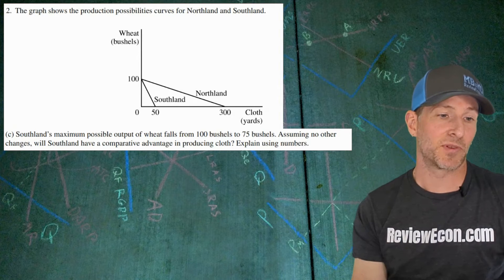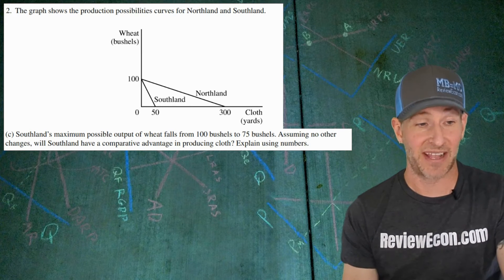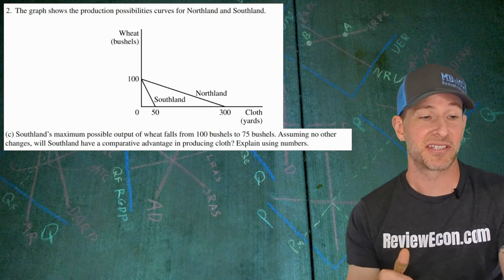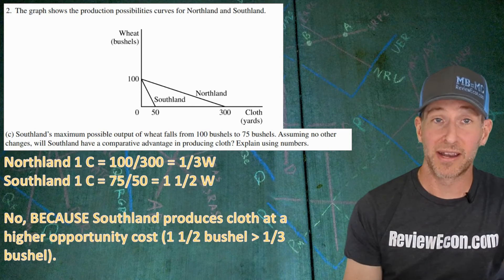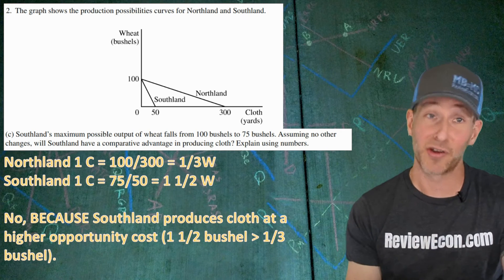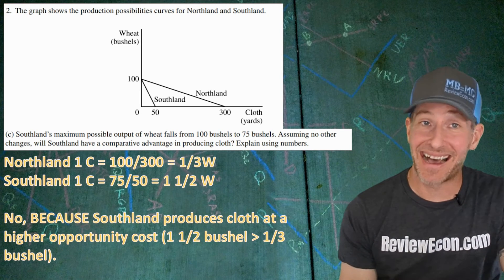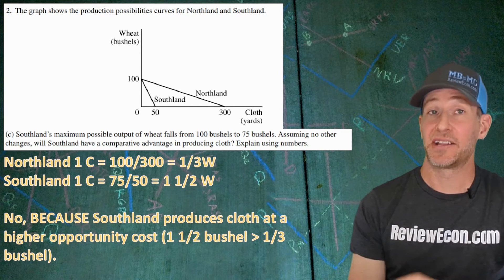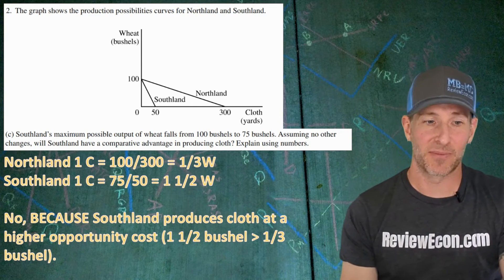On to part C, Southland's maximum possible output falls from 100 bushels of wheat down to 75 bushels of wheat. We're going to assume no other changes. Now we're calculating the comparative advantage for cloth. Does Southland have that comparative advantage? I have the calculations here again. Northland has an opportunity cost for producing cloth of one third a bushel of wheat while Southland has one and a half bushels of wheat as their opportunity cost. So the answer here is no. Southland does not have the comparative advantage for cloth. That's because Southland produces cloth at a higher opportunity cost. One and a half bushels of wheat is greater than one third a bushel of wheat, and those are their opportunity costs.